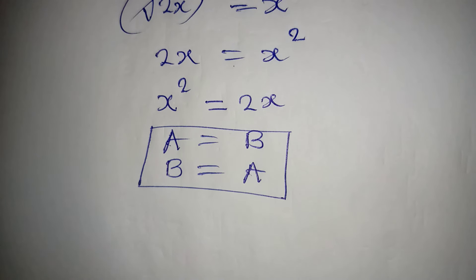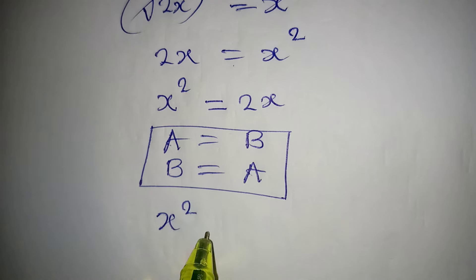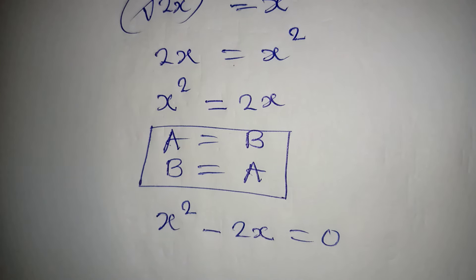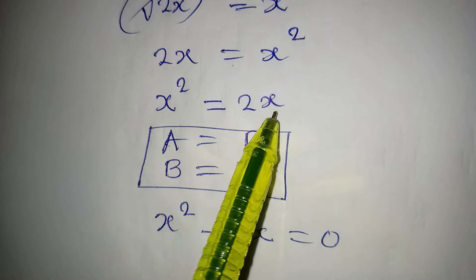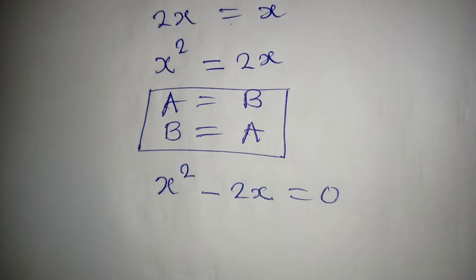Now take this to the other side so we have x squared minus 2x to be equal to zero. That 2x is coming to meet with this, it will change its sign.